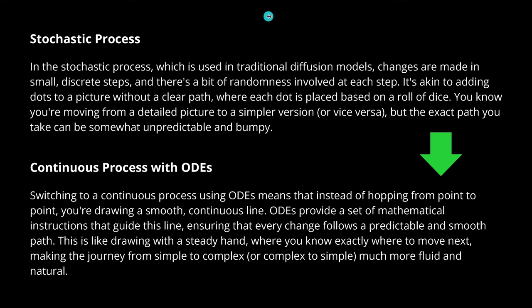In traditional diffusion models, we have a mathematical stochastic process. Changes are made in small, discrete steps with a bit of randomness involved in each step — akin to adding dots to a picture without a clear path, where each dot is placed on a roll of dice. To make this system simpler and faster to calculate, you can go from a stochastic process to a continuous process. In mathematics, the simplest way to do this is with ordinary differential equations. We are switching in a kind of simplification to a continuous process.